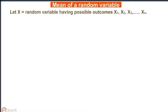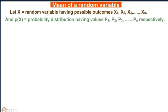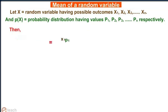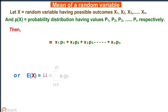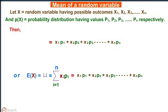Mean of a random variable. Let x be a random variable having possible outcomes x1, x2 up to xn, and px be the probability distribution having values p1, p2 up to pn respectively. Then the mean, represented by mu, equals x1 times p1 plus x2 times p2 up to xn times pn, or E(x) equals mu equals summation from i equals 1 to n of xi times pi.